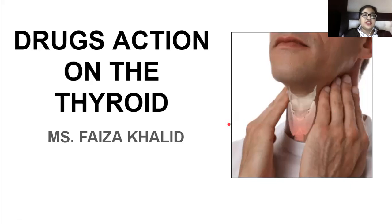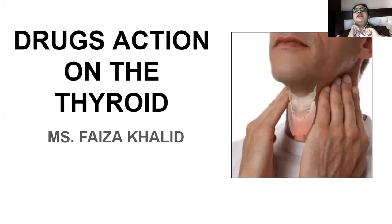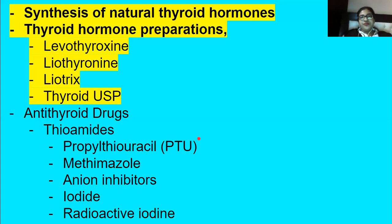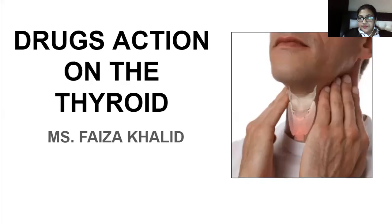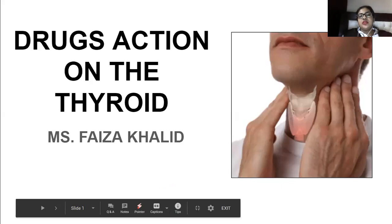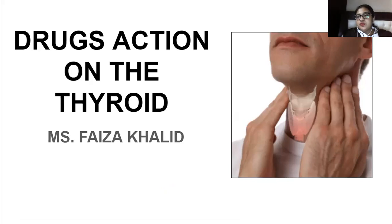Starting with drugs action on the thyroid. The thyroid gland is located on the sideways of your neck. Thyroid gland actually produces thyroid hormone. Can anybody tell me from where the thyroid gland is getting messages — what chemical is released to stimulate the thyroid gland?